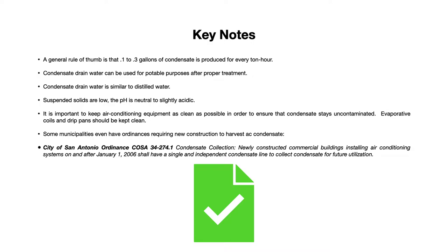Some key notes: a general rule of thumb is that 0.1 to 0.3 gallons of condensate is produced every hour. Condensate drain water can be used for potable purposes after proper treatment. Condensate drain water is similar to distilled water — suspended solids are low, and the pH is neutral to slightly acidic. Proper treatment is important if it's going to be used for drinking purposes.